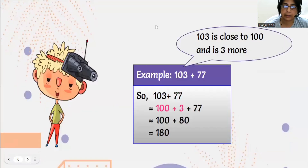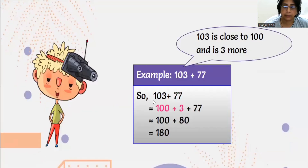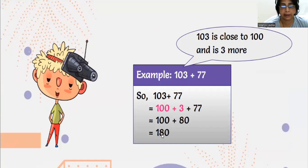Now, next another example. You can see it here: 103 plus 77. 103 is close to 100, and 3 is more. So 100 plus 3 plus 77 — 77 plus 3 is 80. So 100 plus 80 is 180. Easily, without carrying, you can add this and it will not confuse you.